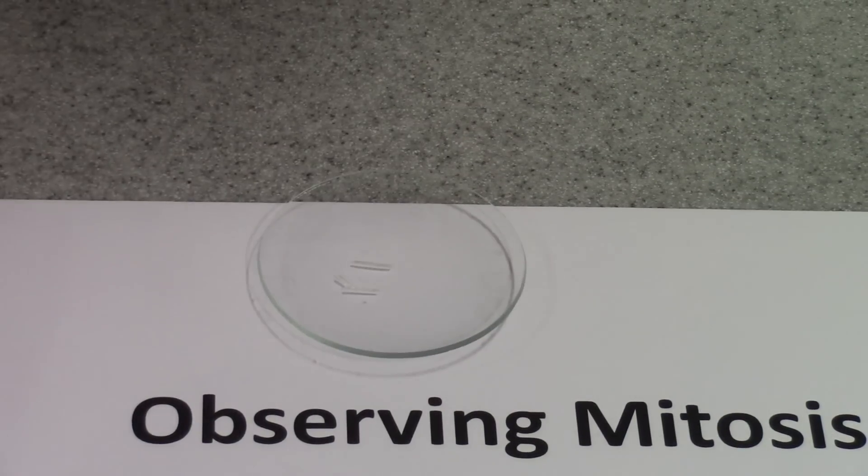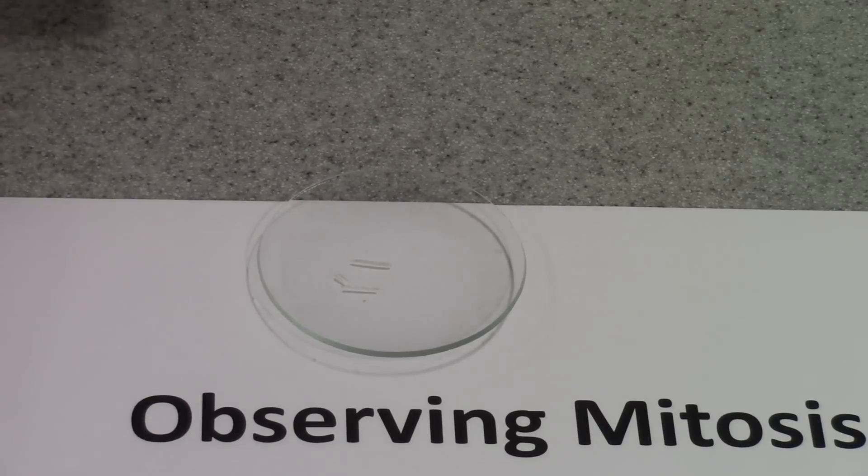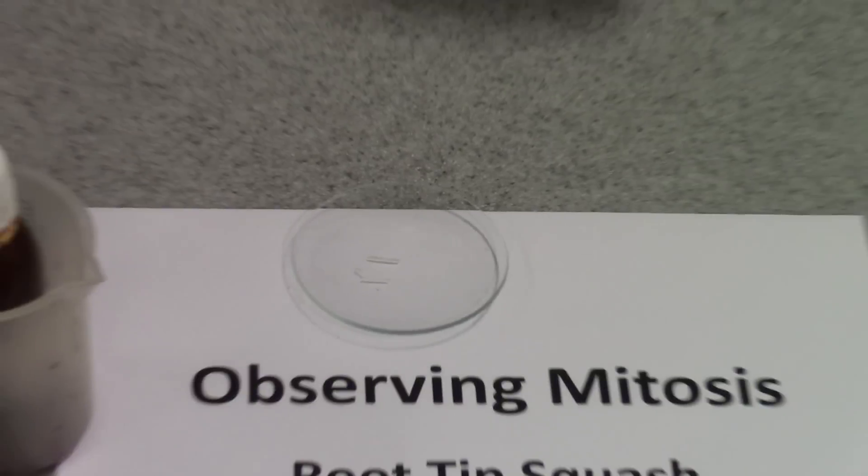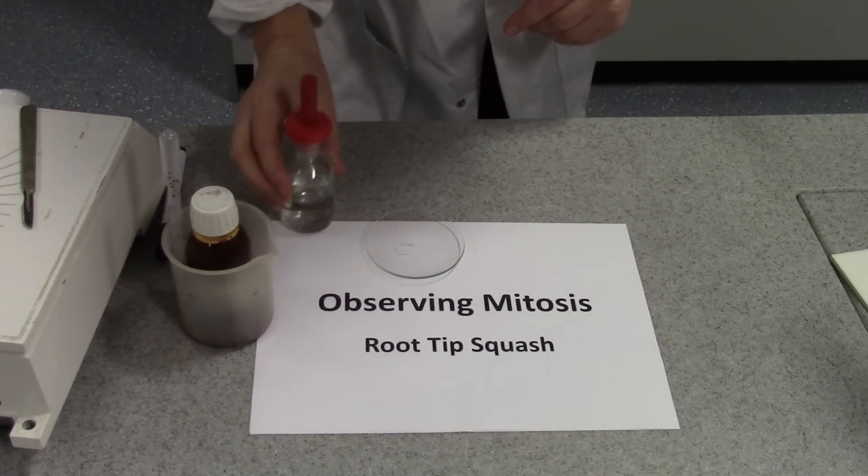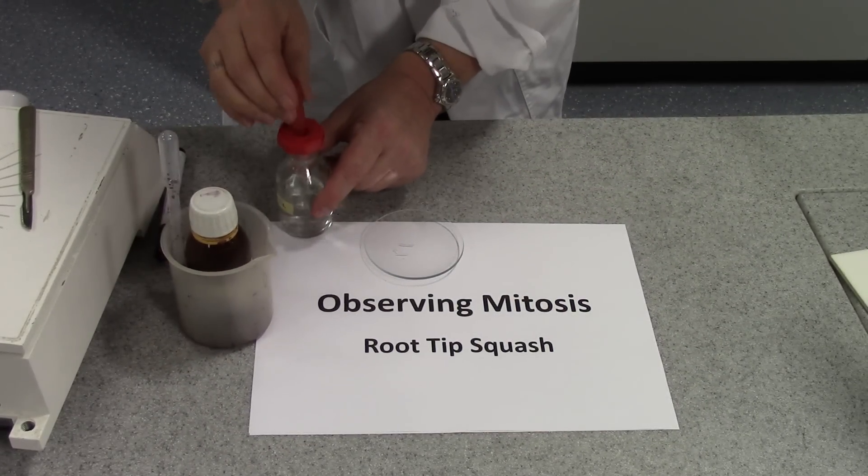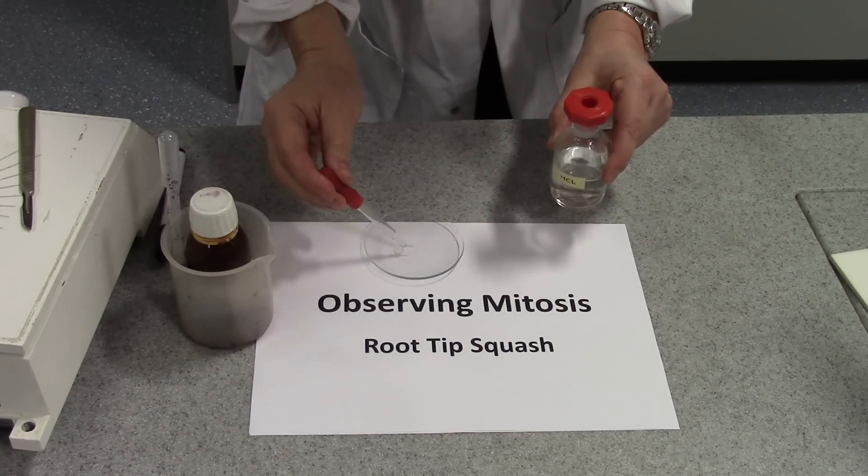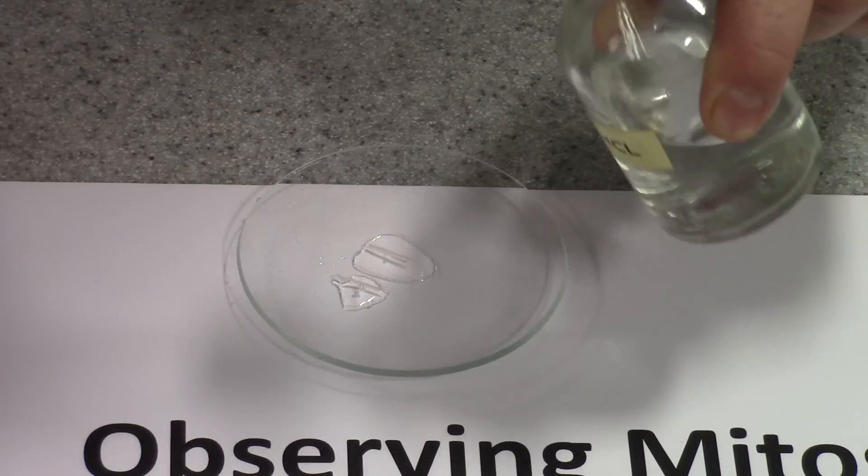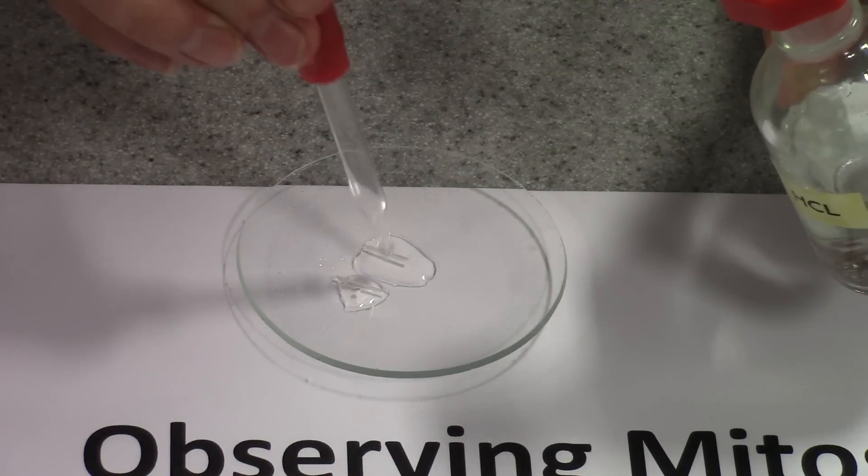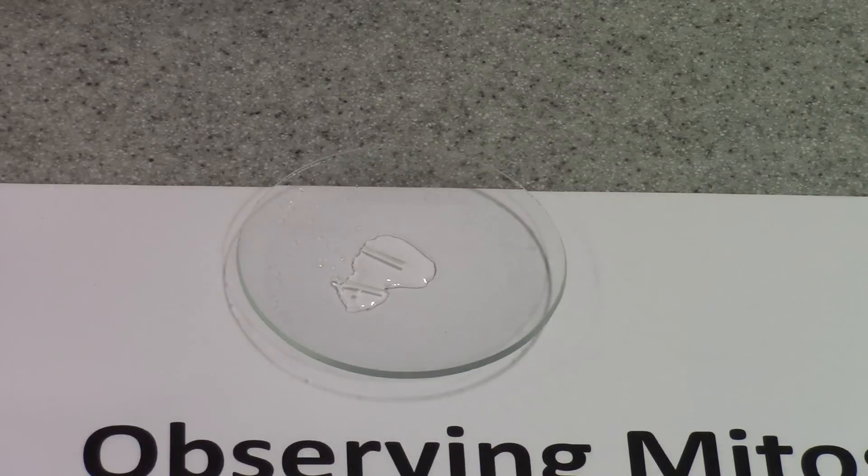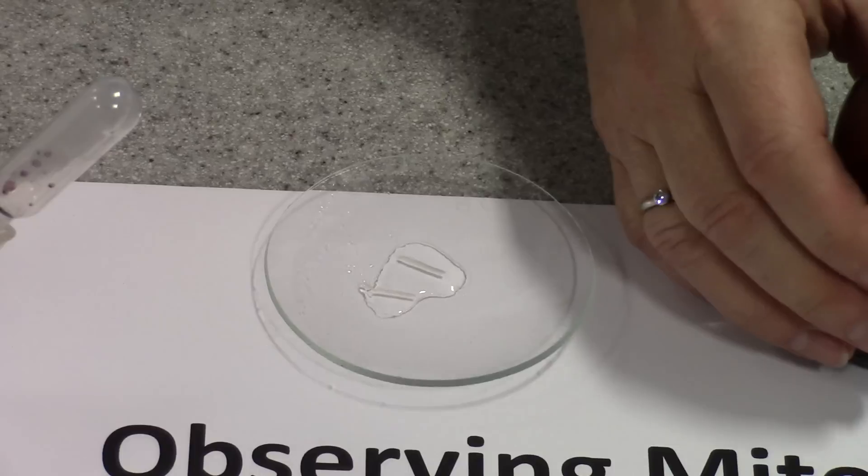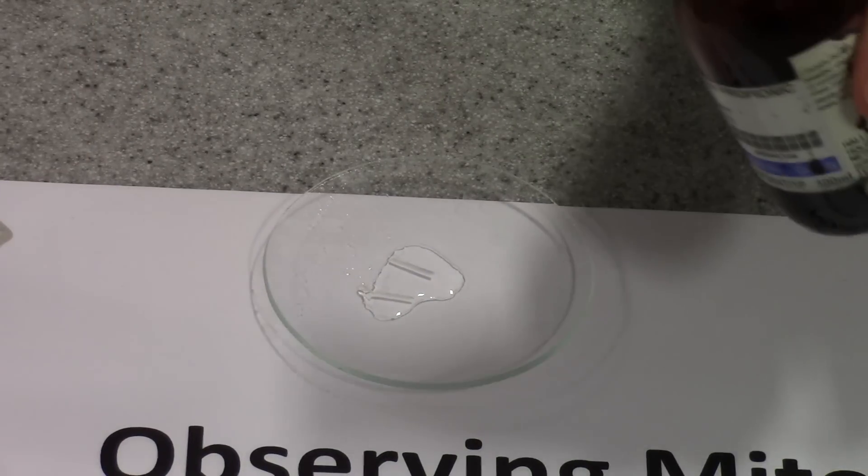Right, next job we need to add a stain and for this procedure we use something called acetic eosin stain. But before we add the stain, we need a drop of hydrochloric acid. So I'm going to add there some 2 molar hydrochloric acid to my root tips. Maybe a little bit more. And then we need an equal volume of acetic eosin stain which smells rather vinegary because of the acetic acid in there.